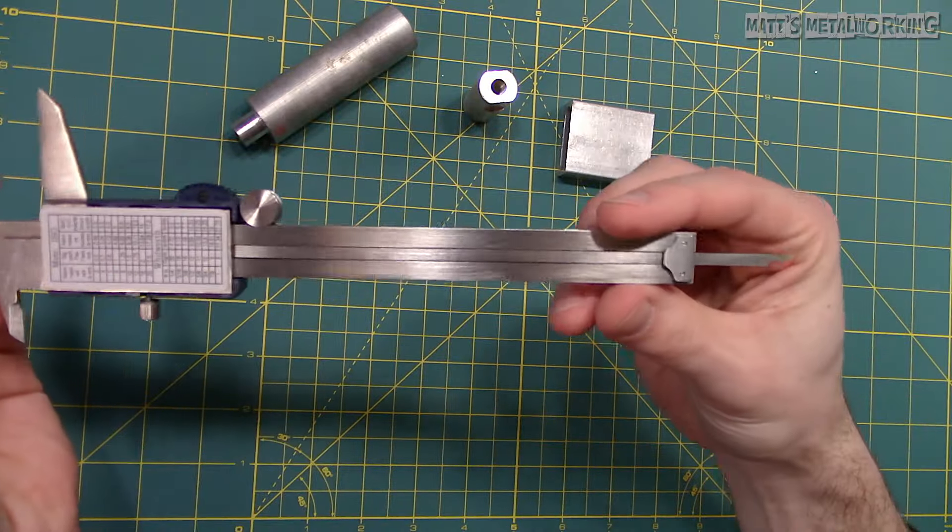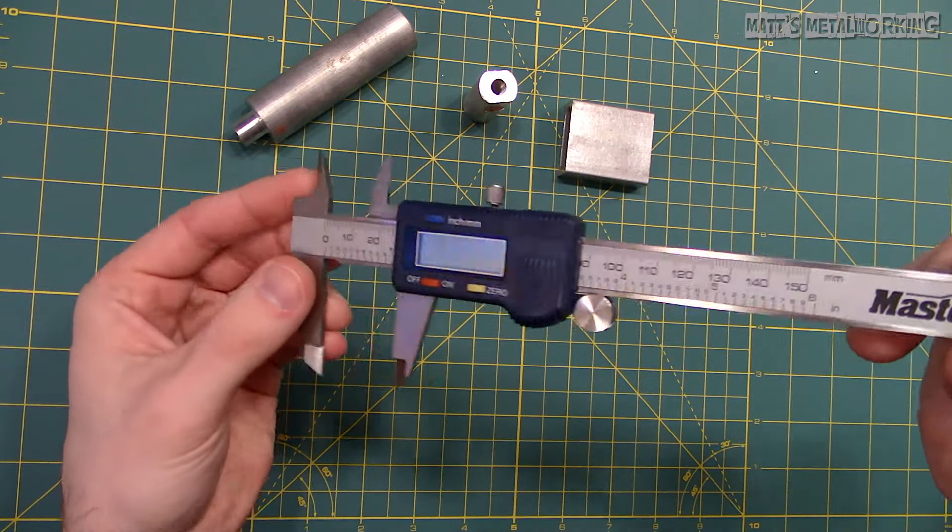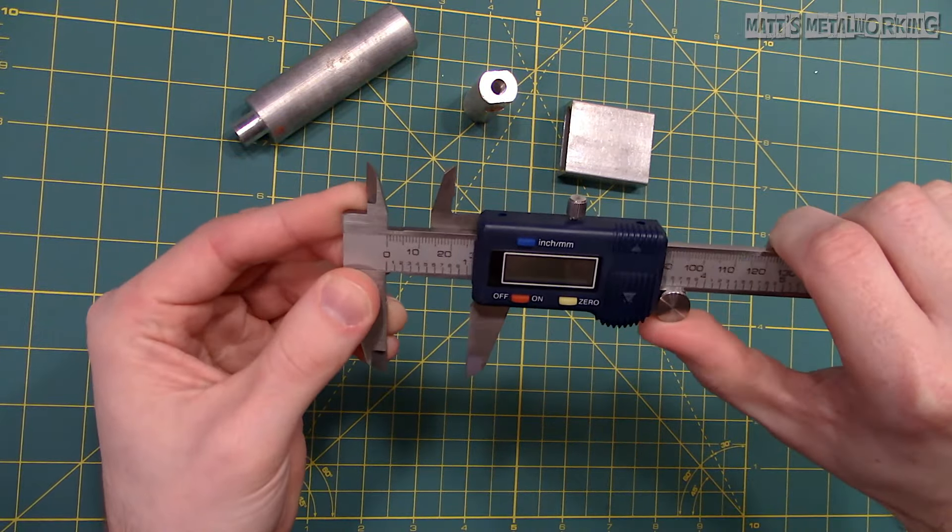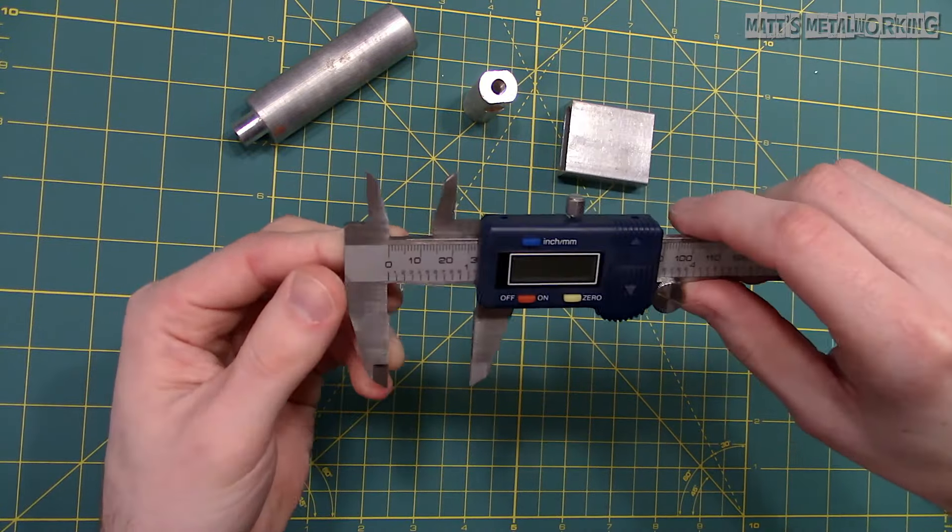A digital caliper is by far the easiest to use and read, can operate in both imperial and metric measurements, however it is the most expensive to purchase and does require electronic upkeep being battery replacement.